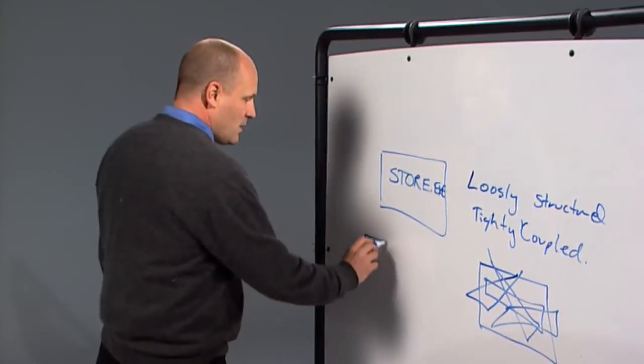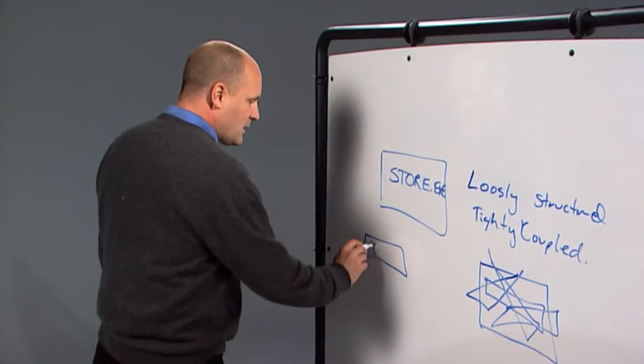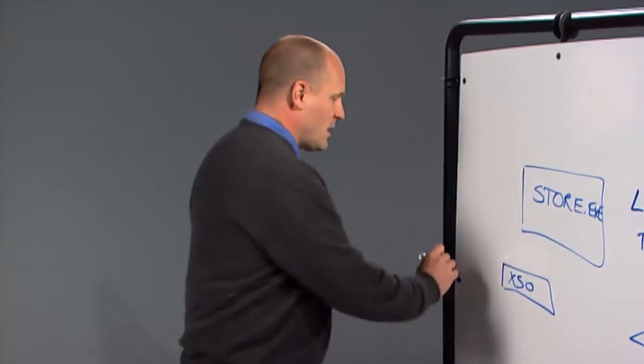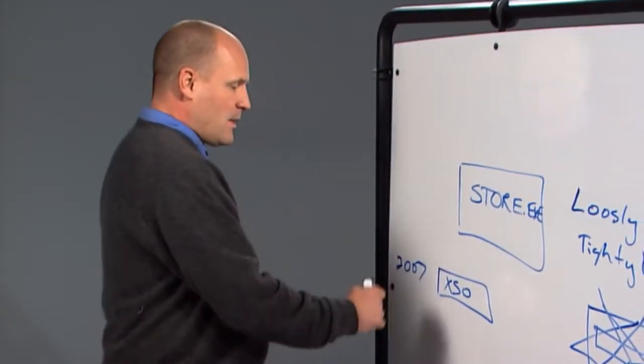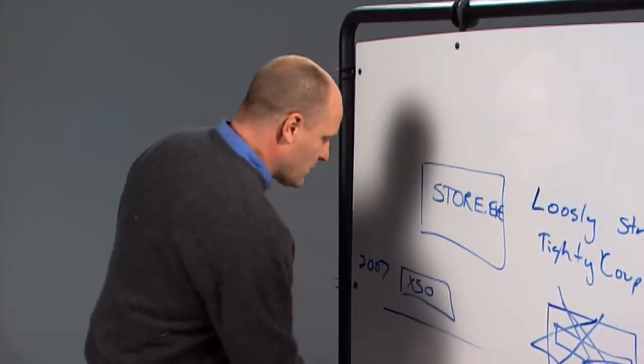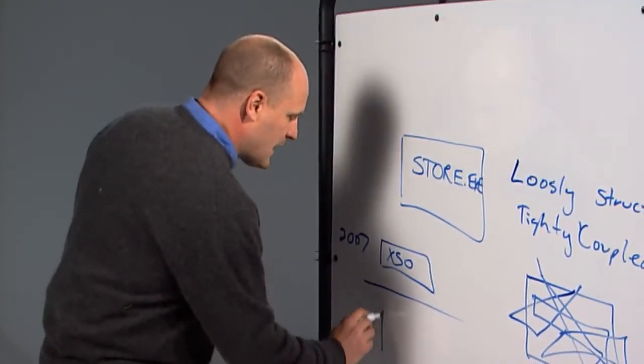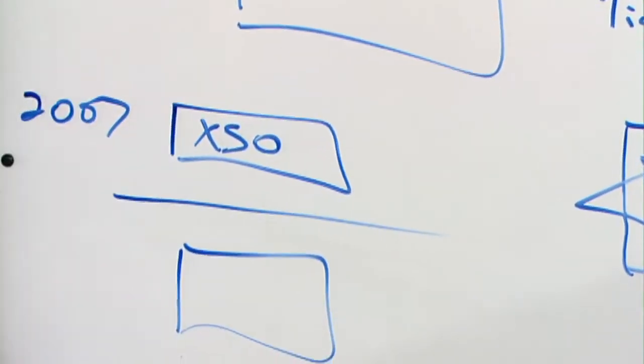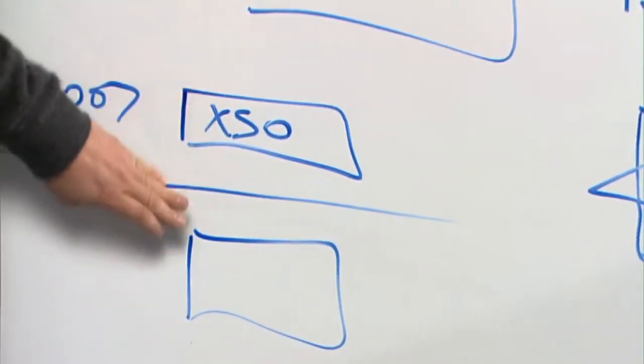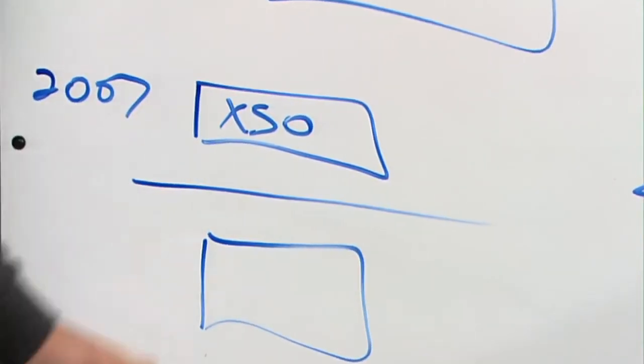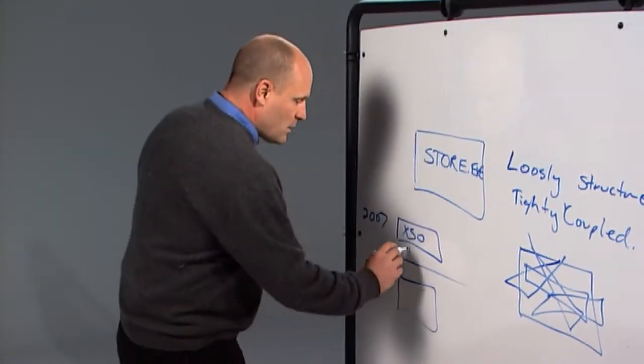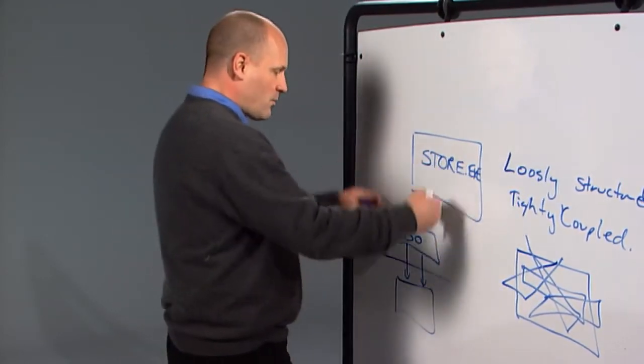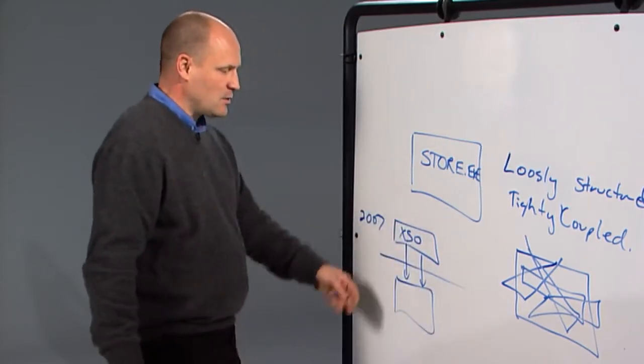So in the first release, what we did was we built a clean storage object layer. This was Exchange 2007. They could sit at a clean interface, and one of the tests of the clean interface was that it could sit on a different machine. So you could actually not only have a process boundary, but the interface here was efficient enough. It could work across machines. And it would talk to the store through one protocol. So all of our protocols then would start coming through this XSO layer.